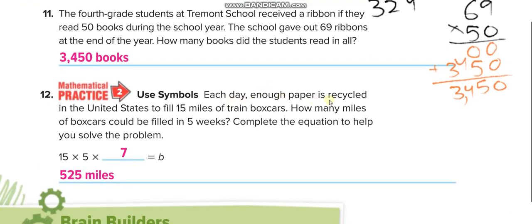Each day, enough paper is recycled in the United States to fill 15 miles of train boxcars. They want us to find the total for 5 weeks. First, find how many days in 5 weeks: 1 week has 7 days, so 5 weeks is 5 times 7, which is 35 days. Then, 15 miles per day times 35 days equals 525 miles.